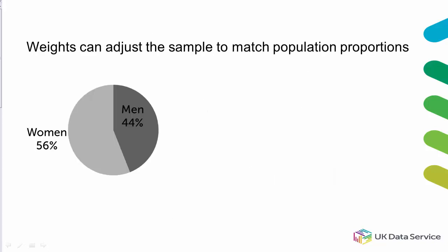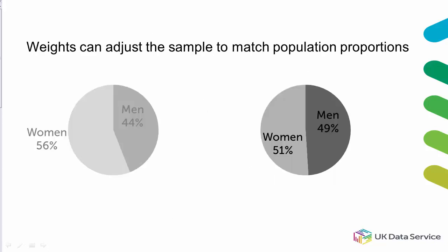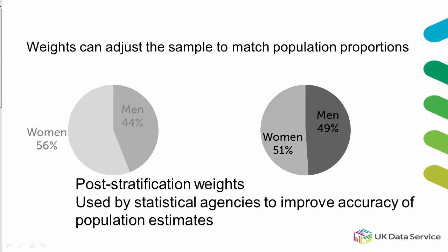We can also use weights to adjust the sample to reflect key population proportions. Known as post-stratification or calibration weights, they use information from sources such as the UK census to improve the accuracy and precision of population estimates.